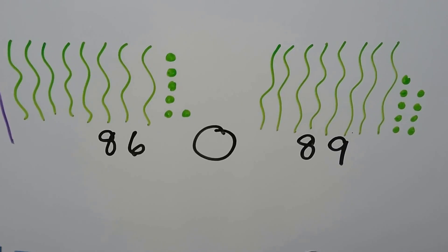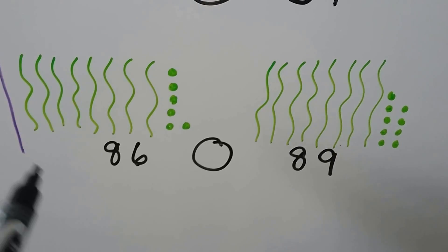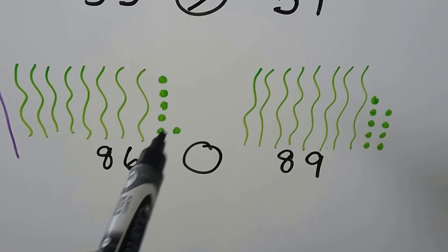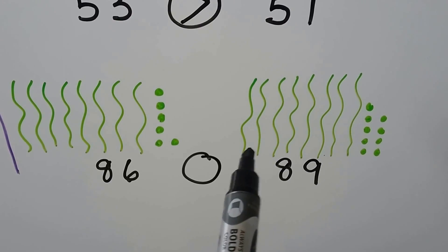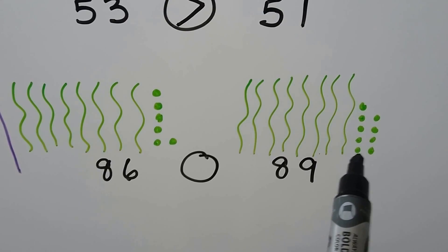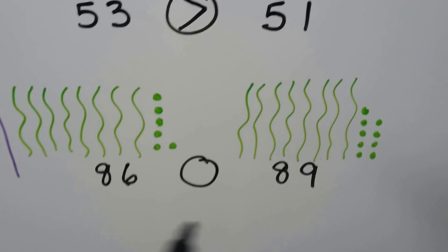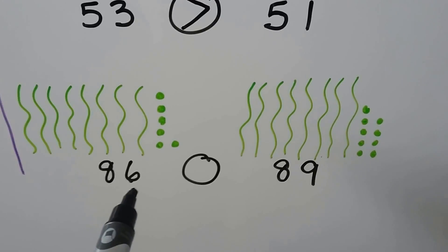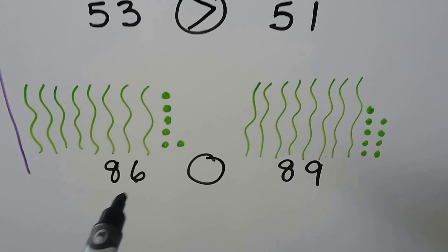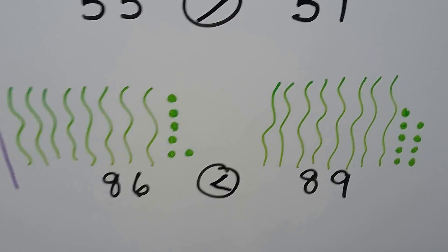Here we have 86 and here we have 89. We count: 10, 20, 30, 40, 50, 60, 70, 80 — then 85, 86, 87, 88, 89. We look at the tens — they have the same amount. So we look at the ones: this has six ones, this has nine ones. Six is less than nine, so 86 is less than 89.